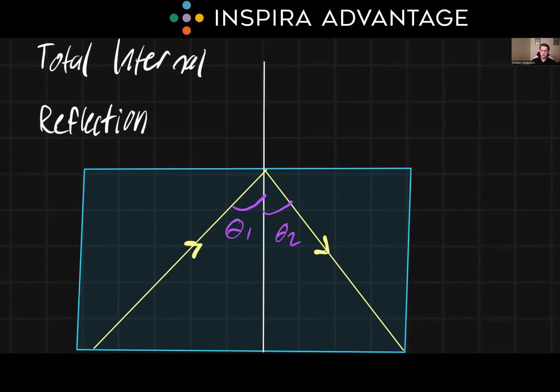It's important to understand that the direction of bending of light is determined by the relationship between the indices of refraction of the two materials and the angles of incidence and refraction, rather than the direction of travel of the light.